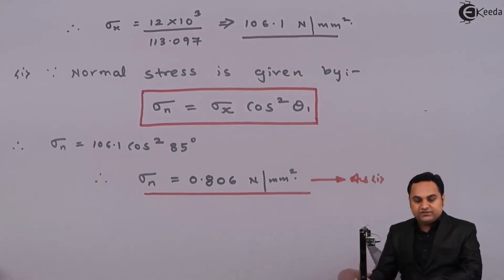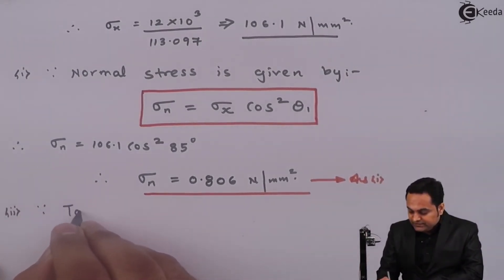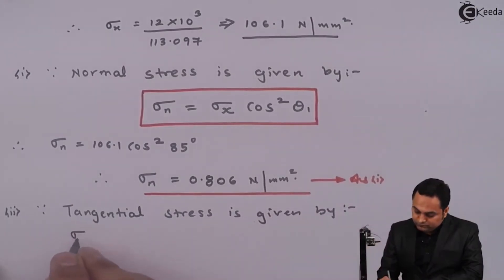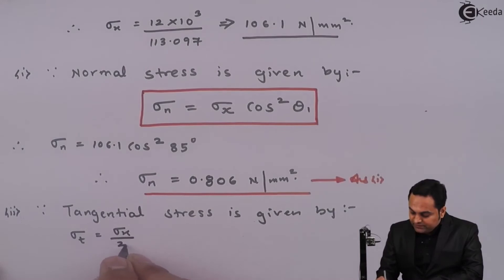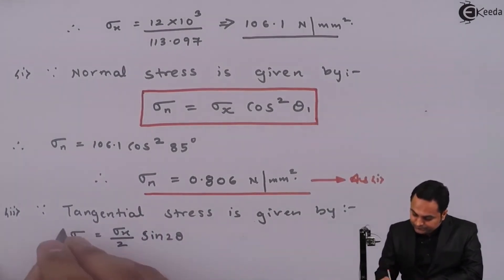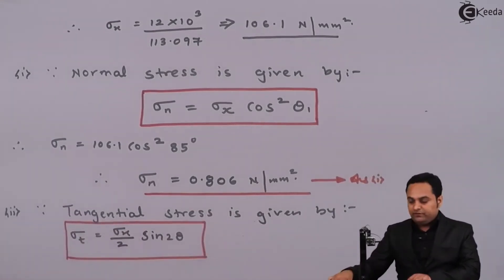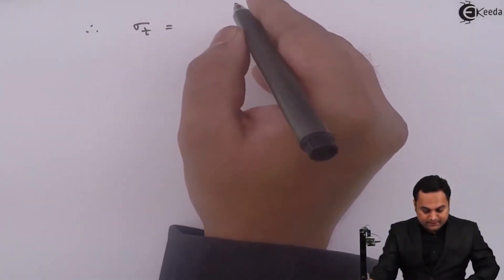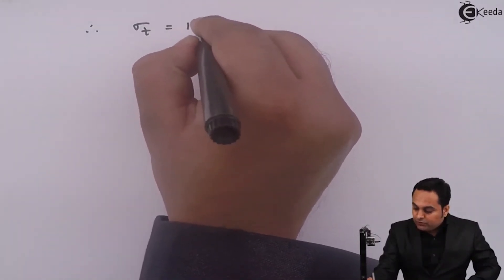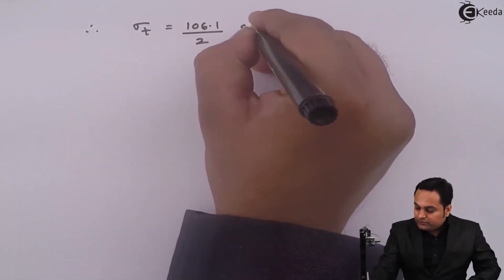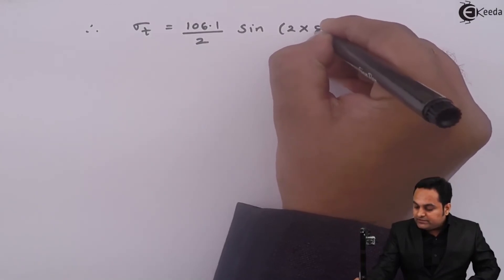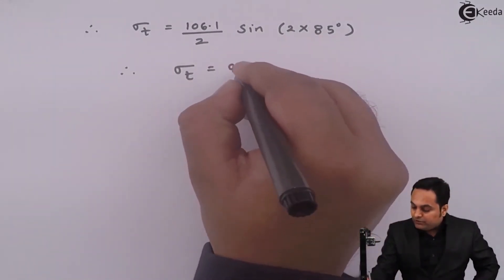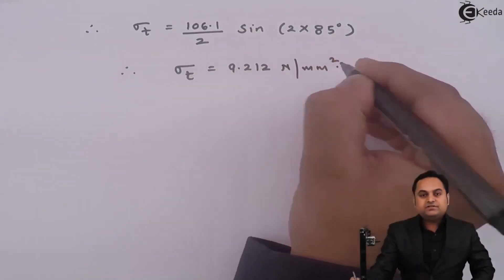Next we have to find tangential stress. The tangential stress formula is sigma t = (sigma x / 2) × sin(2θ). Putting the values: sigma t = 106.1 / 2 × sin(2 × 85°). The tangential stress comes out to be 9.212 N/mm². This is the second answer.